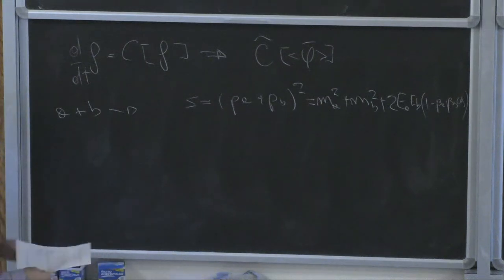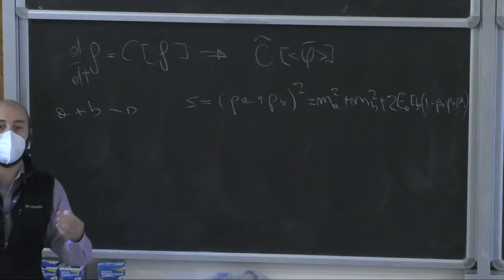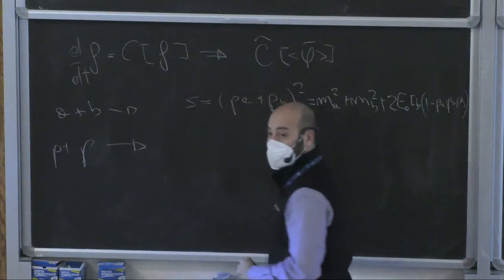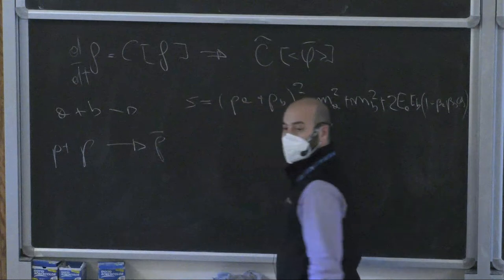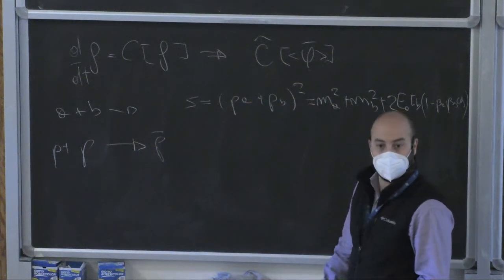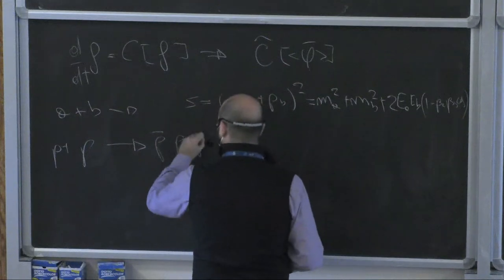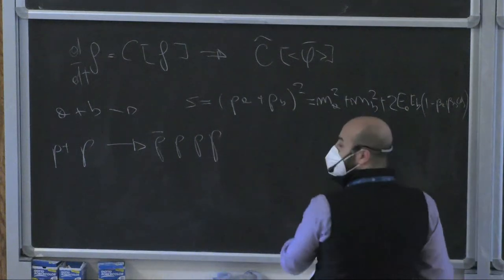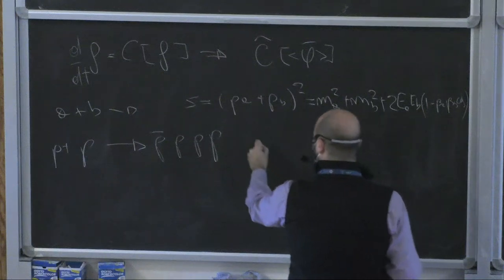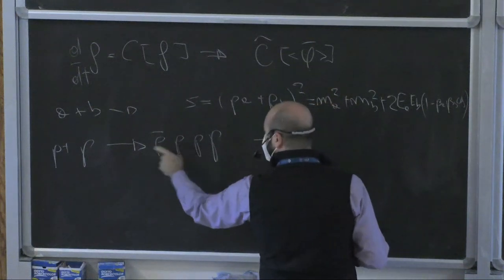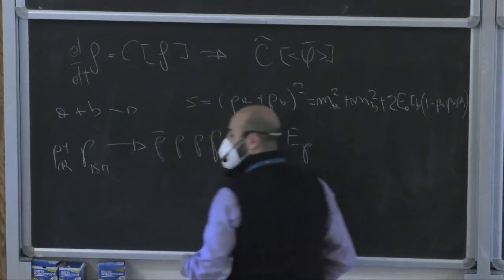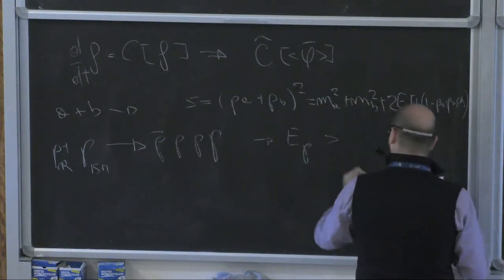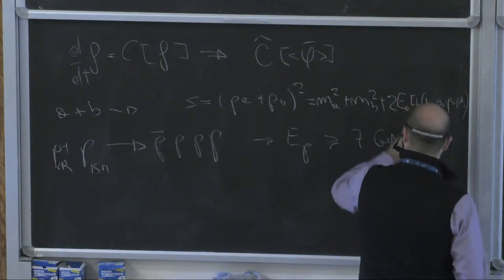For example, one process of practical interest is the production of antiprotons in the collision of cosmic ray protons with the interstellar medium. Applying this to p plus p going into final states: to conserve baryon number and electric charge, you need a minimum number of particles in the final state. Imposing conservation of S, you find that the energy of your impinging proton must be larger than roughly 7 GeV in order to produce an antiproton.